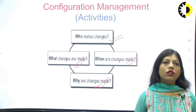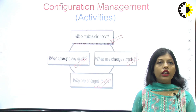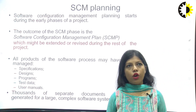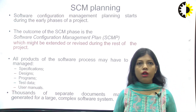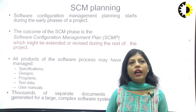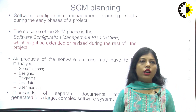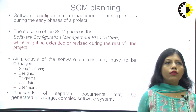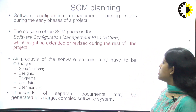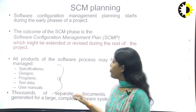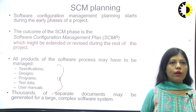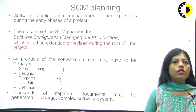Planning for software configuration management starts from the early phases of the project. The outcome of the SCM plan may be extended or revised during the rest of the project. All products of the software process must be managed — specification, design, program, test data, and user manual. Thousands of separate documents may be generated for a large, complex software system.